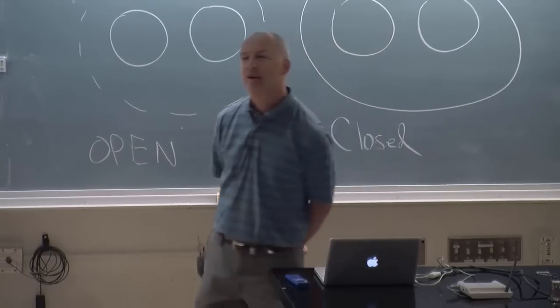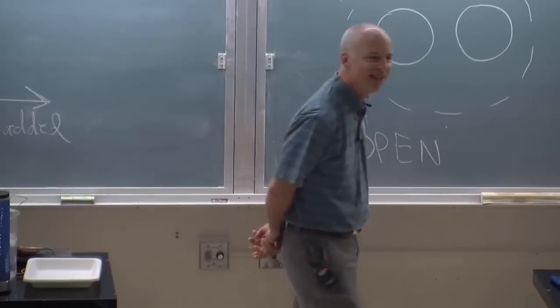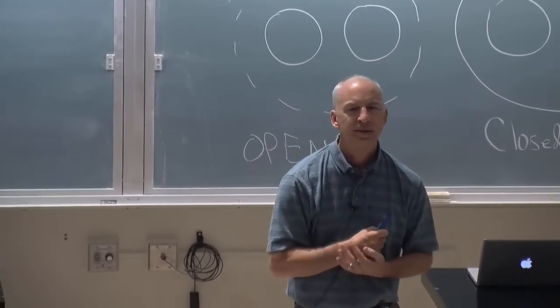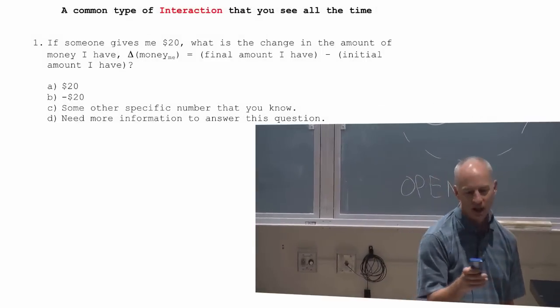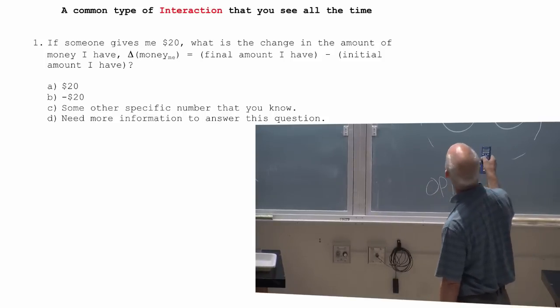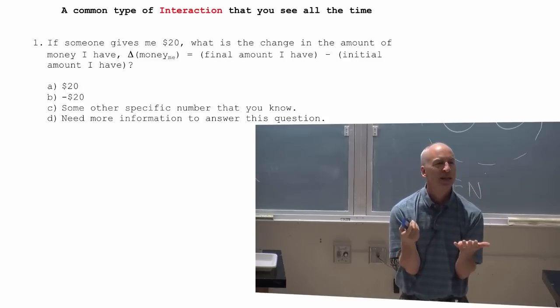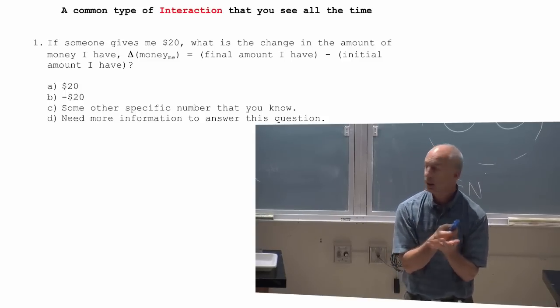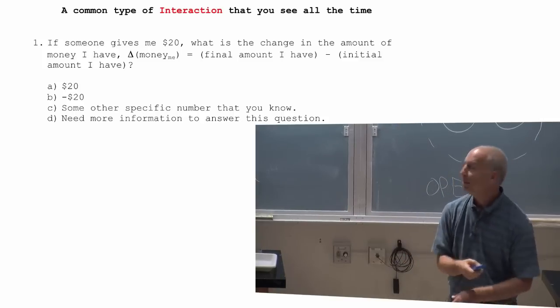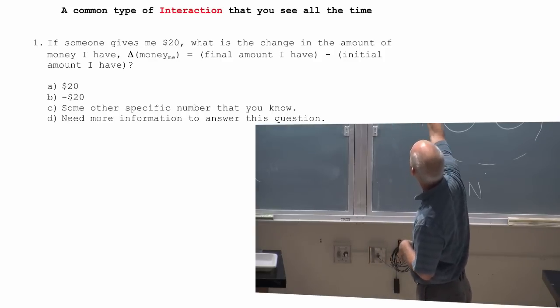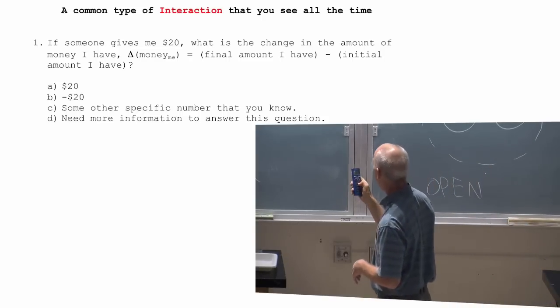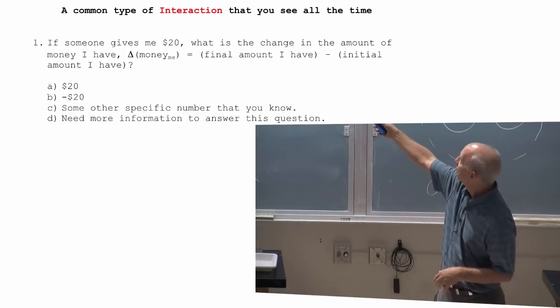I'm going to give you a minute to talk about it and think about it after I ask you the question. So the question I have for you, that I want you to talk about however much talking you need to do, is about this kind of interaction. If someone gives me $20, what is the change in the amount of money I have? When we're talking about interactions, we look at things that have changed. Change is symbolized by that delta sign. Delta something is a change in that thing. Change in the amount of money that I have - money sub B is the final amount minus the initial amount that I had. That's the question I have for you. Here's some possible answers.